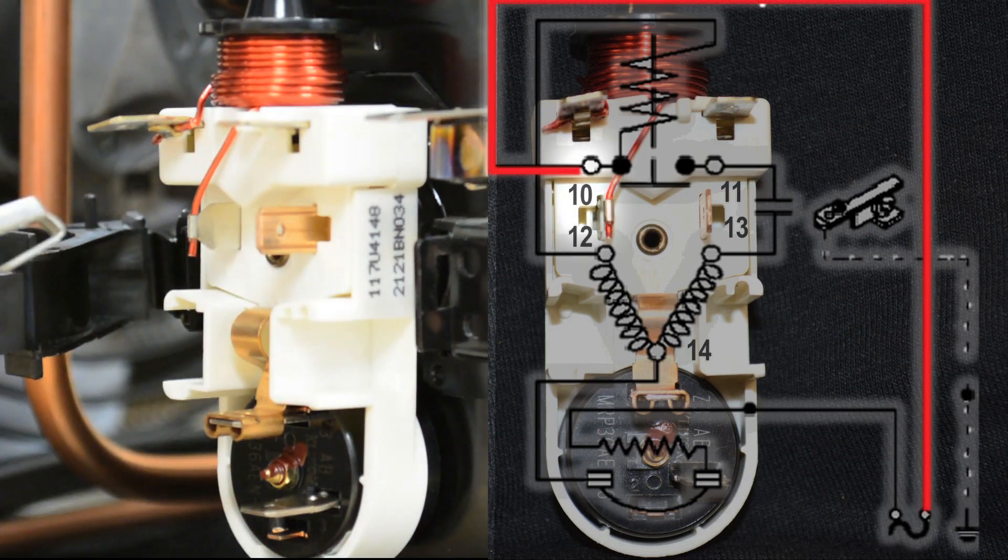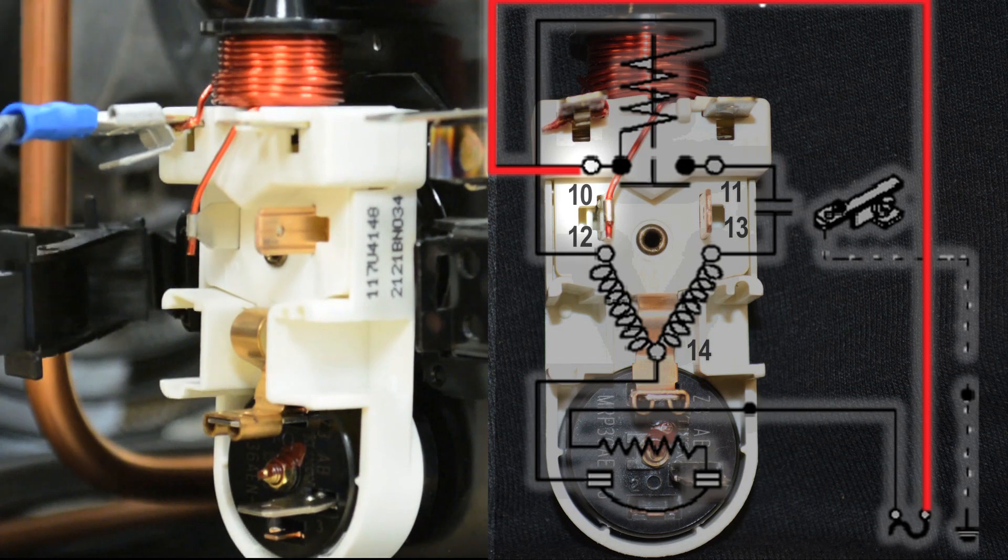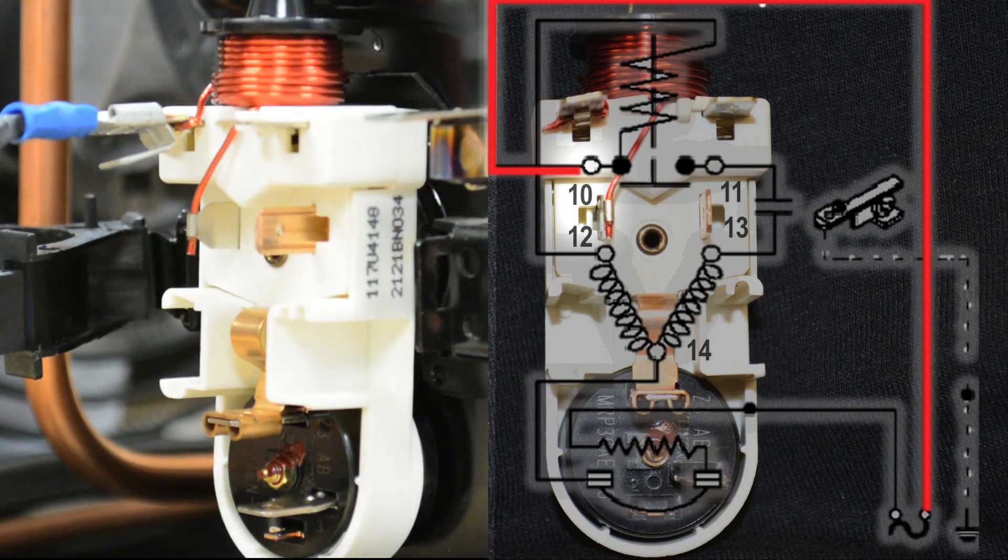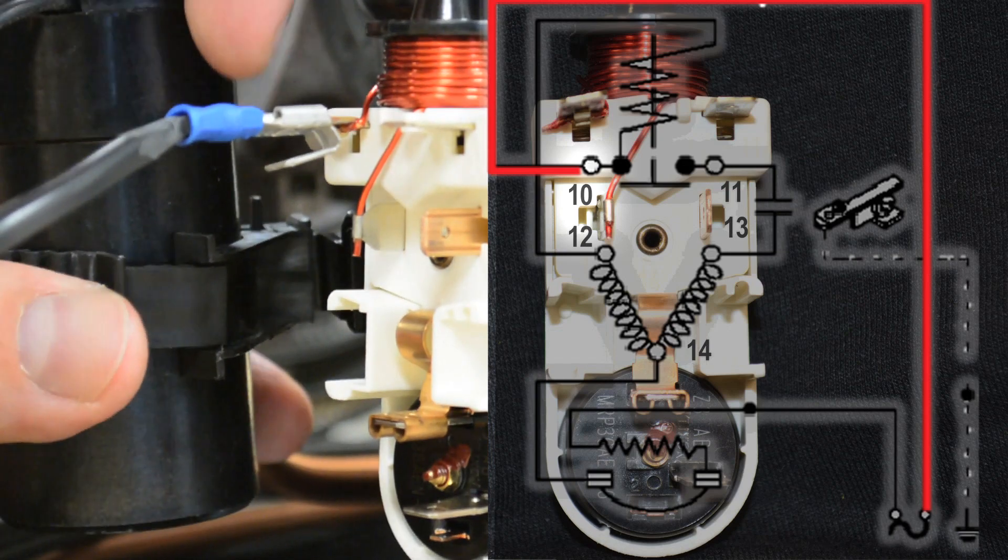With that established we'll begin the wiring by connecting the line voltage to the run terminal at number 10 on the start relay. Next we'll install the start capacitor in the included mounting bracket.